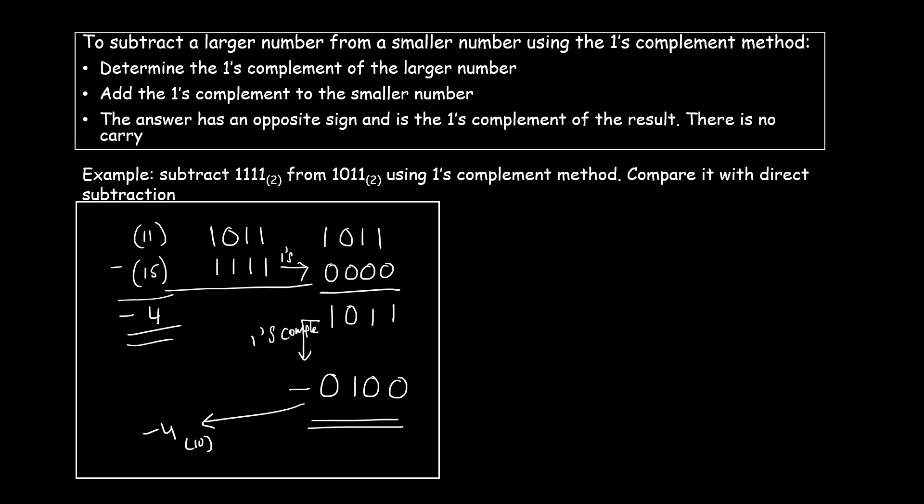This is how you perform subtraction using the one's complement method. Whether subtracting a smaller from a larger or a larger from a smaller number, you always find the one's complement of the second number and add it to the first. If you get a carry, add it to the result. If you don't get a carry, take the one's complement of the result and negate it. If you found this helpful, please subscribe to the channel and share it with your friends. Thank you.